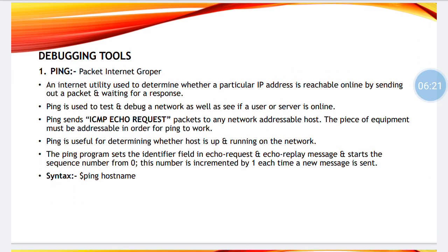Coming to debugging tools. Firstly we have ping, that is Packet Internet Grouper, which is an internet utility used to determine whether a particular IP address is reachable online by sending out a packet and waiting for a response. Ping is used to test and debug a network as well as see if a user or server is online. In your command prompt, type 'ping' followed by your IP address — for example, ping 192.168.1.5 — and it will tell you whether that particular IP address is alive and how much time the packet is taking to send and receive.